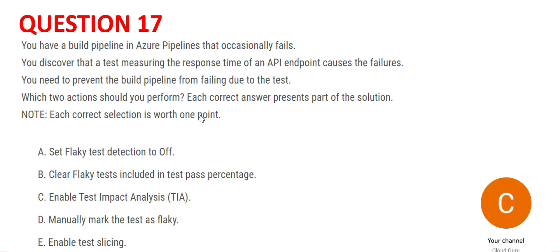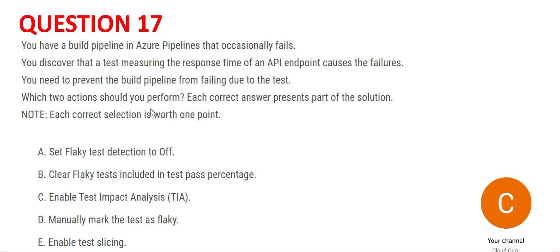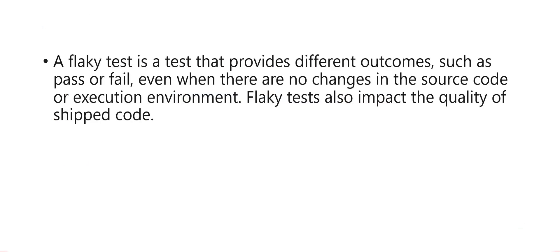Let's look at question 17. In short, there are two processes — process one is the pipeline and process two is a testing process that is hampering process one. You need to prevent the failure of process one due to process two, and you need to select two answers. Let's look at flaky test detection. A flaky test is one that passes in the first round of testing but fails in the second round without any code or environment change — it is not a stable test.